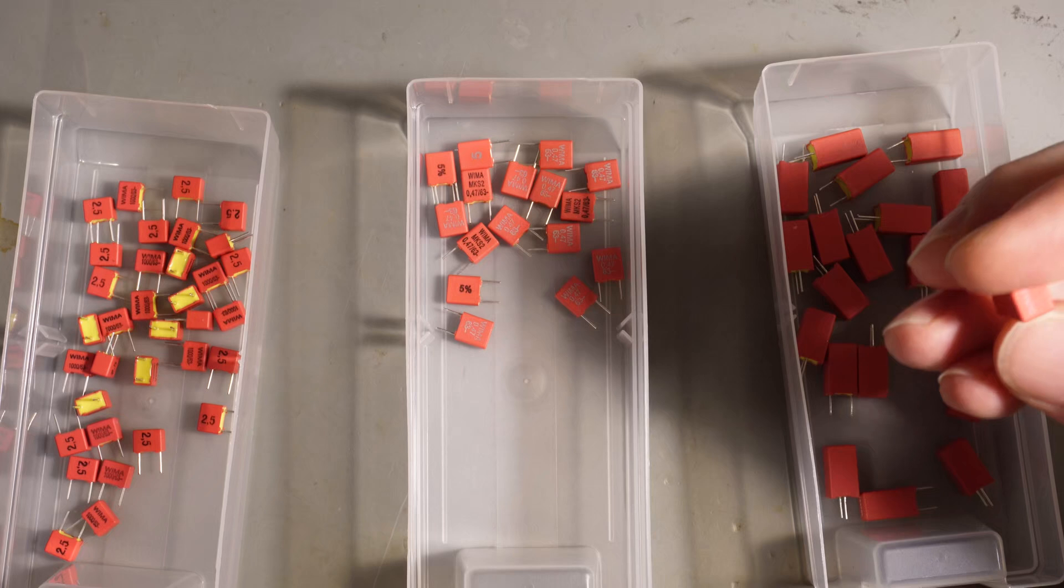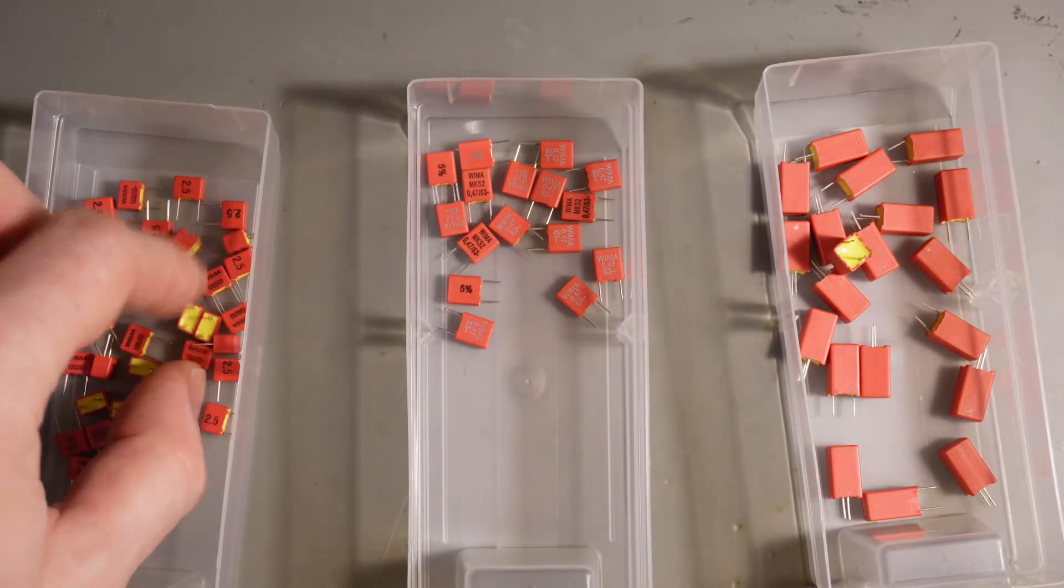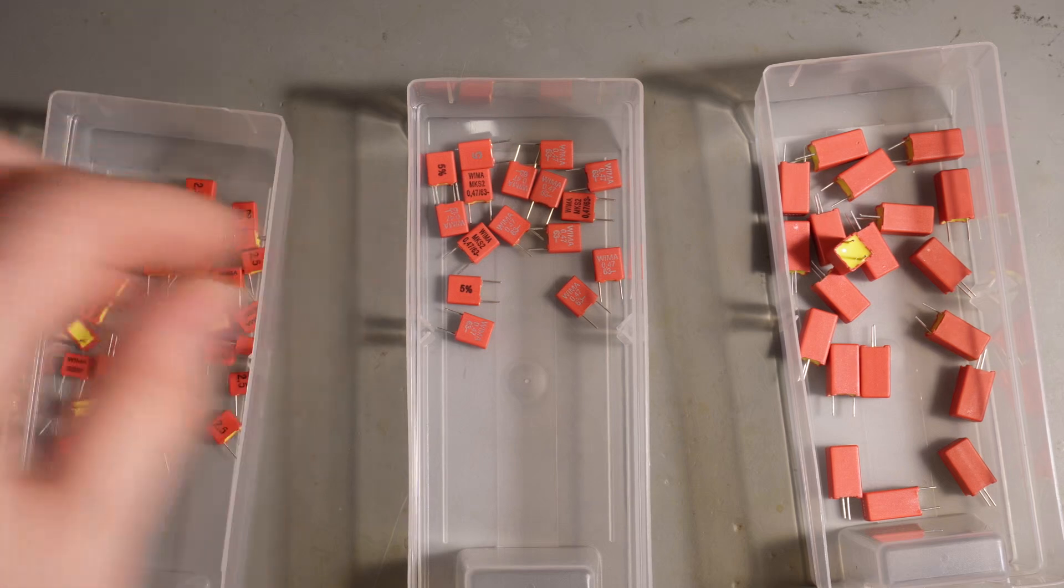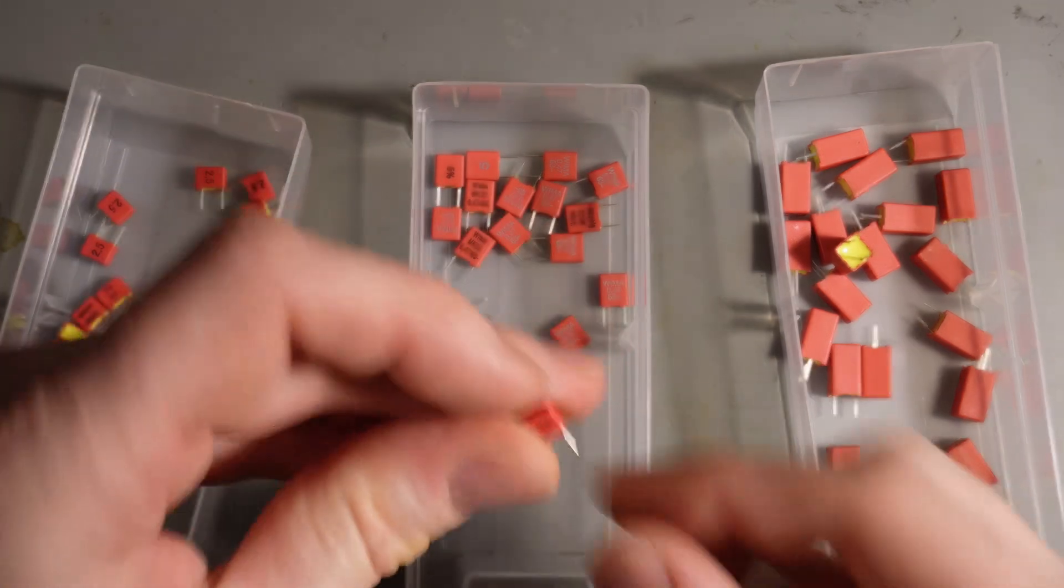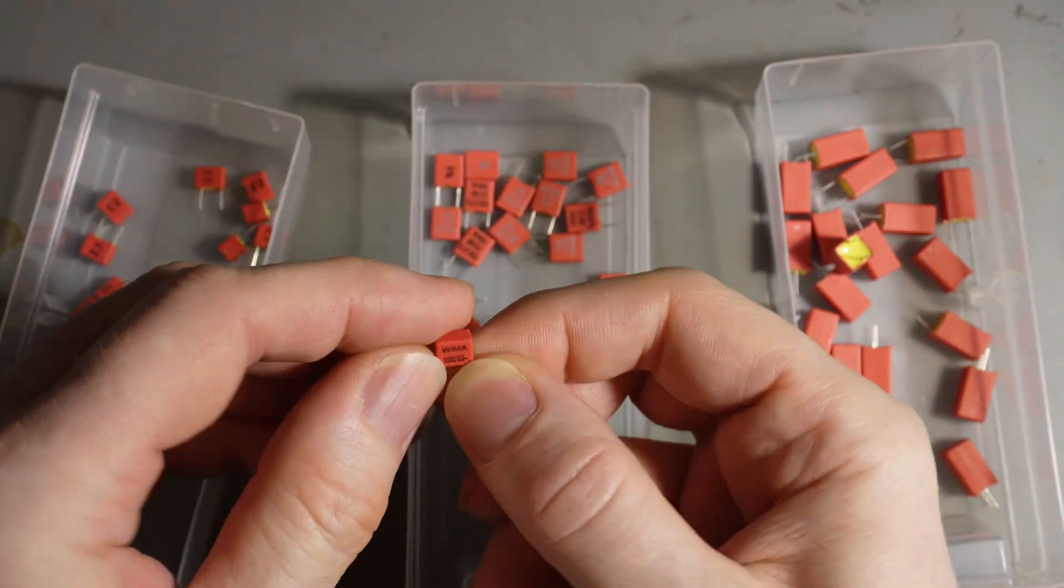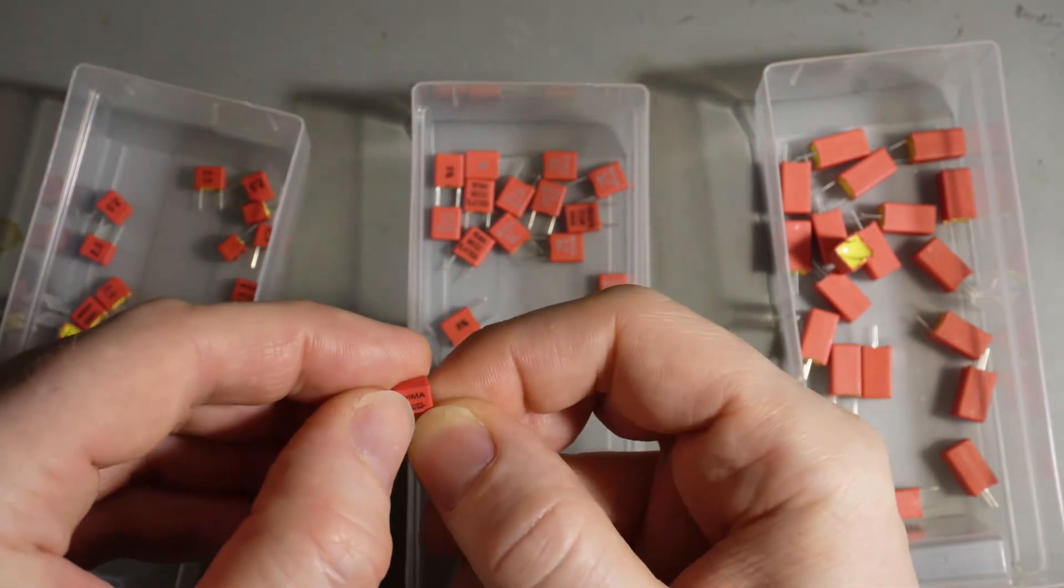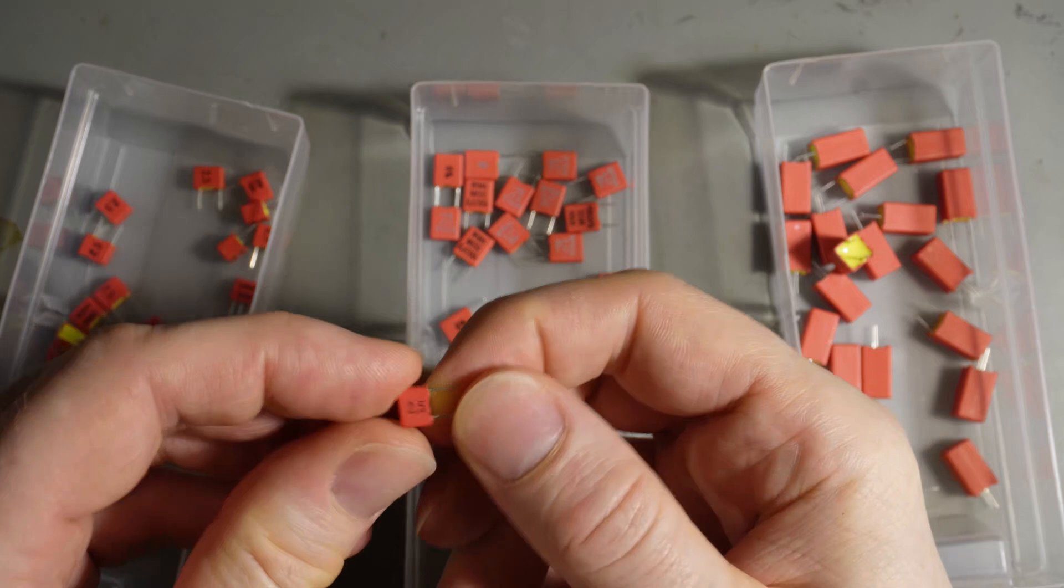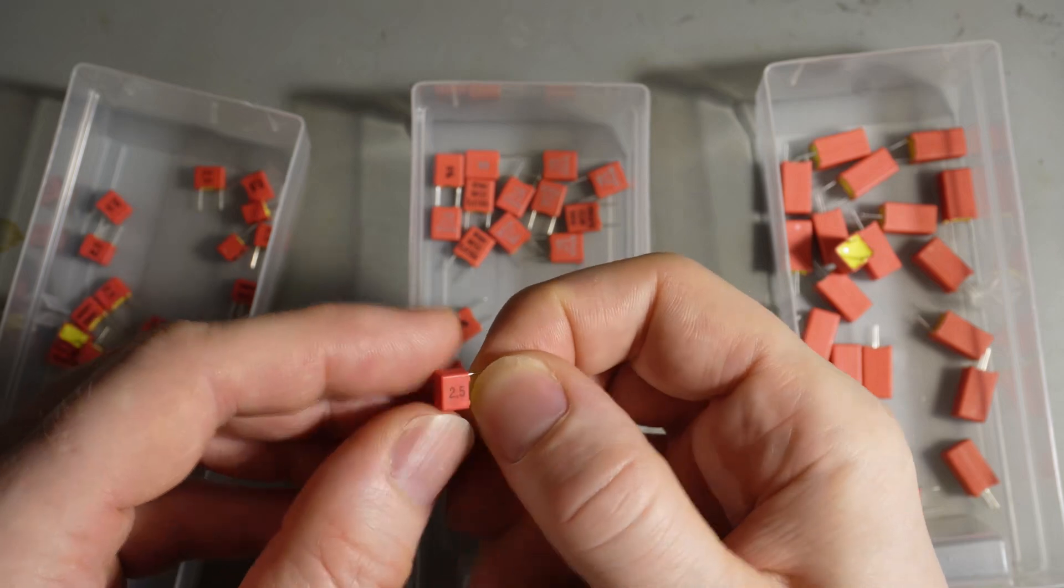Those are film capacitors. They also come in different packages and film capacitors is very general. They come with different properties here and stuff like that. I picked them out here because they're all different here actually. Here on it is 1000 slash 63. This would mean this is 1000 picofarad. So this is one nanofarad and it's up to 63 volts. And also on the other side here is a 2.5. This means the tolerance is 2.5 percent.